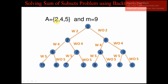Now we will look at the algorithm to solve this problem with an example. The given set has three numbers: 2, 4, 5, and the given sum value is 9. By inspection we can see that 4 plus 5 equals 9, but we are going to see how to solve it using backtracking. First, we consider a zero set, and from that we take the first element.